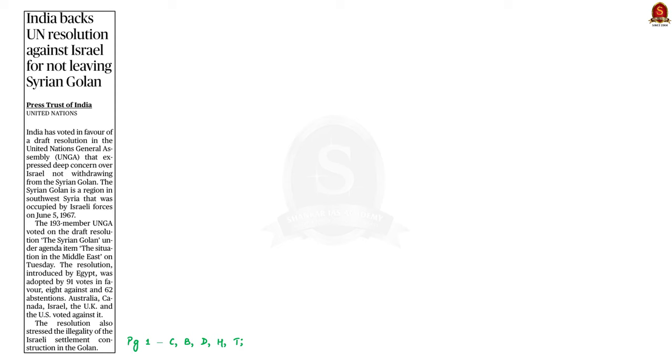Look at this news article. Recently Egypt introduced a resolution in UNGA against the illegal occupation of Golan Heights region by Israel. This Golan Heights region was originally a part of Syria. Nearly 91 countries supported this resolution which condemned Israel. India also voted in support of this resolution. Few countries like USA, Australia, Canada, and UK voted against this resolution, that is in favor of Israel.